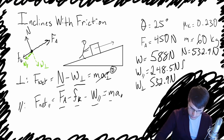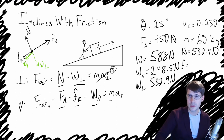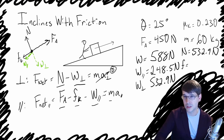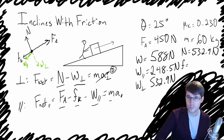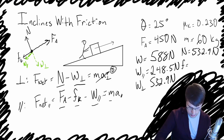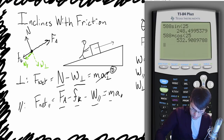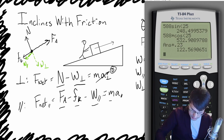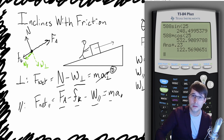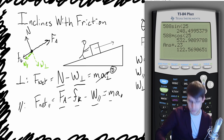We can now calculate the friction force. The friction force equals mu times the normal force. The coefficient of friction is 0.23, and the normal force is 532.9 newtons. Multiplying by 0.23, the friction force is 122.56, or approximately 122.6 newtons.